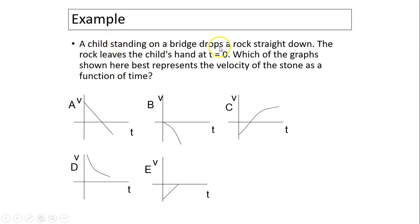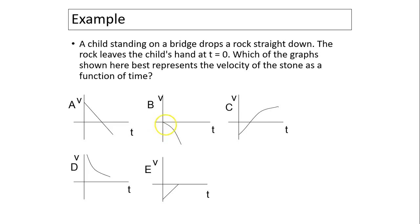Next example: a child stands on a bridge and drops a rock straight down. The rock leaves the child's hand at T equals zero. Which graph best represents the velocity of the stone as a function of time? The keyword 'drops' means velocity should start at zero. Looking at the graphs, only B starts with zero. When the child drops the rock, velocity increases in the negative direction — downward is usually negative. The line is not straight because of air resistance, which causes the acceleration to change. So the answer is B.